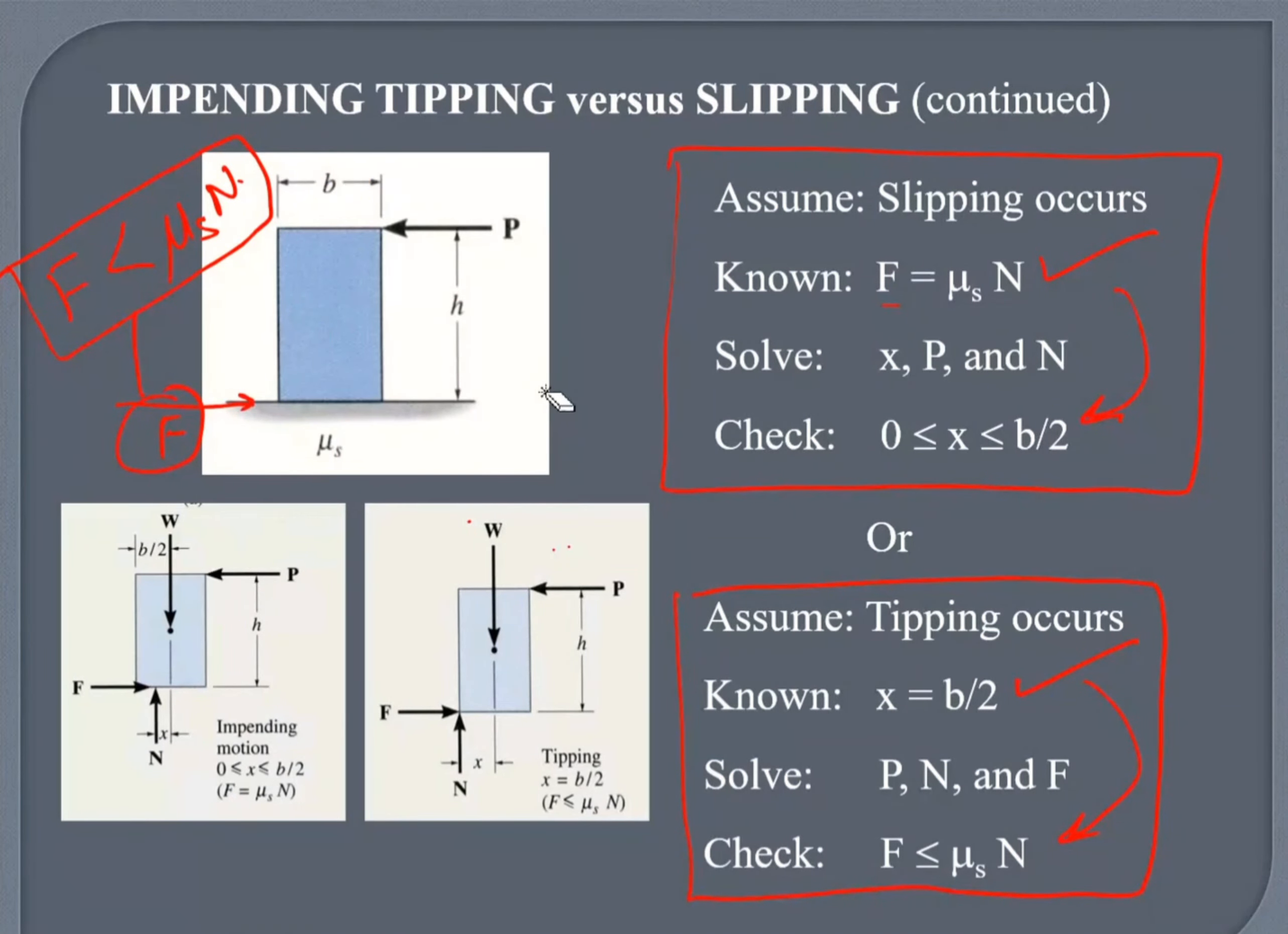Sir, there's a question. That's a very good point. It should be less than. Because if it's equal to, then you can take any, you can take either tipping or slipping. Equal to means it's either going to tip or it's the verge of tipping and slipping.